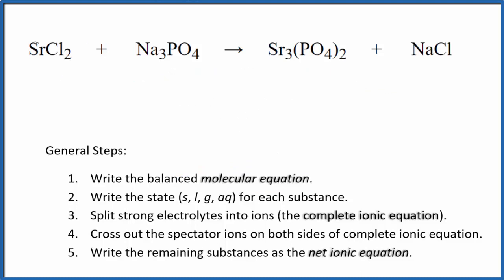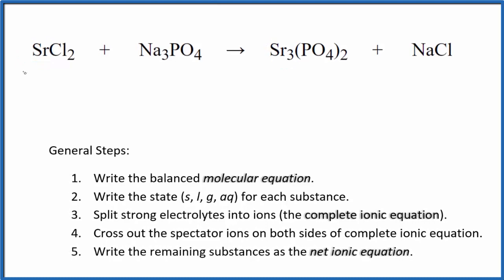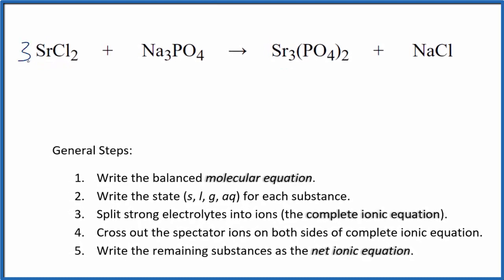Since I have 1 strontium here and 3 here, I'll put a 3 in front of the strontium chloride. 3 times 2, that'll give me 6 of these chlorides. I'm just going to put a 6 here. Now I have 6 sodiums and only 3 here. I'll put a 2 here. Then 2 phosphates here and then 2 here. So that's the balanced molecular equation.